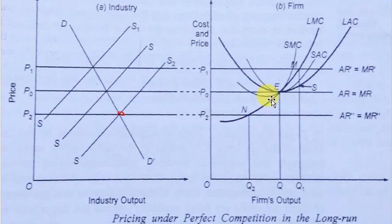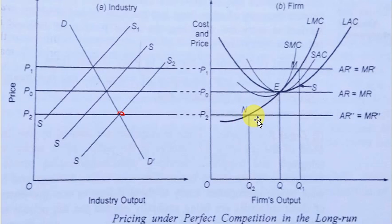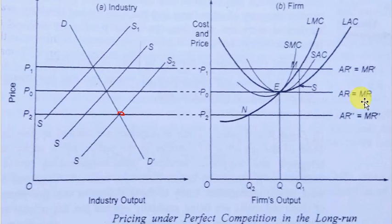At the new equilibrium with S2, the long-run marginal cost cannot cover the long-run average cost. If firms cannot cover long-run variable costs, they will quit the industry. As firms quit, supply decreases and the supply curve shifts leftward. The market-determined price returns to OP-not, where AR equals MR equals LAC equals LMC at the equilibrium point, and firms earn only normal profit.